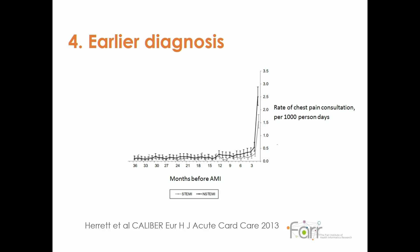Earlier diagnosis matters whether in cancer or cardiovascular disease — getting to the root of the problem sooner may allow more effective treatments. Here's an example from the same linked electronic health record data: these are all people who went on to have a heart attack, and this looks back at the rate of chest pain consultations in the period before that event. There's an increase in chest pain consultations prior to a heart attack — is that an opportunity where other interventions could have prevented it? Hard to identify without large-scale data.